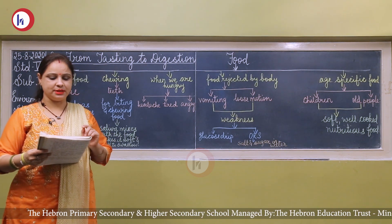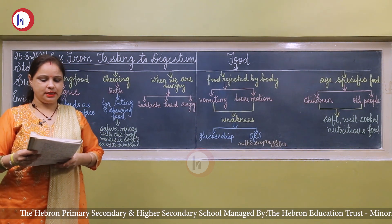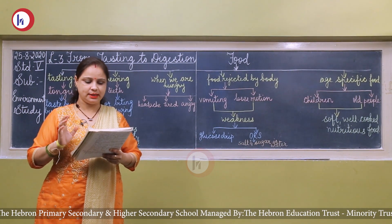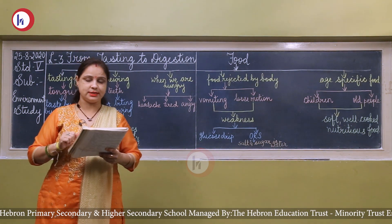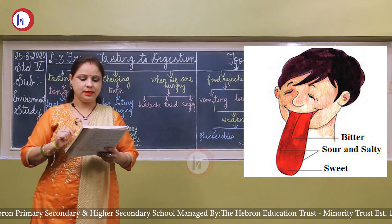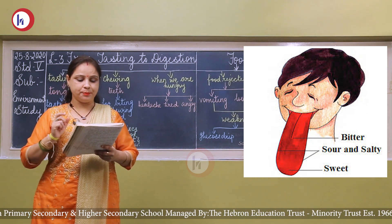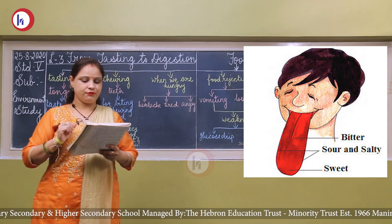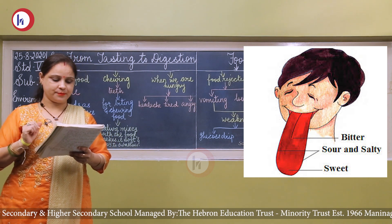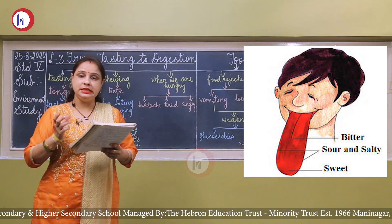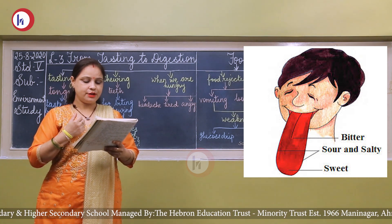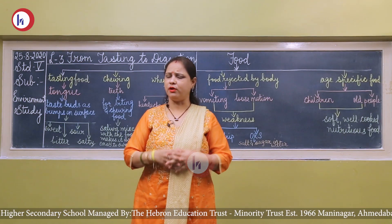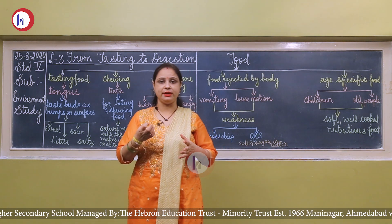Our tongue helps us in tasting, but there are specific places on the tongue where we can recognize a particular taste more than others. For example, the tip of our tongue recognizes sweet taste, the upper side recognizes salty taste, above that we recognize sour taste, and bitter taste is recognized near our throat area. That is why we get a bitter taste even when swallowing bitter medicines.